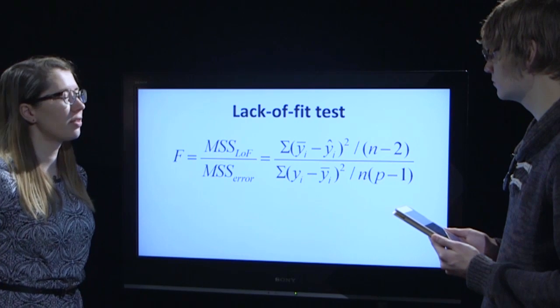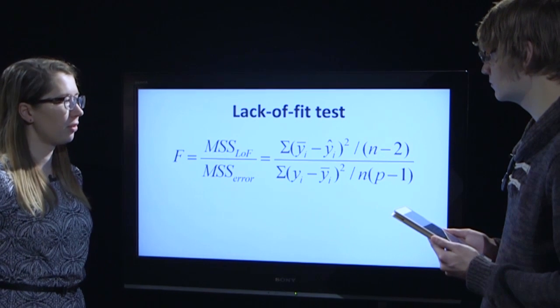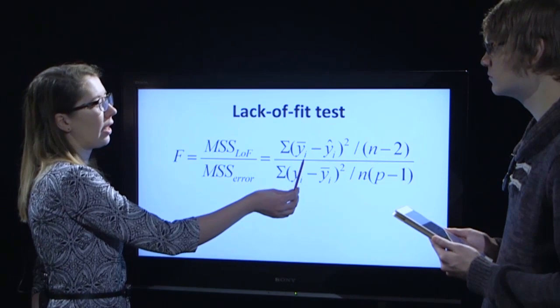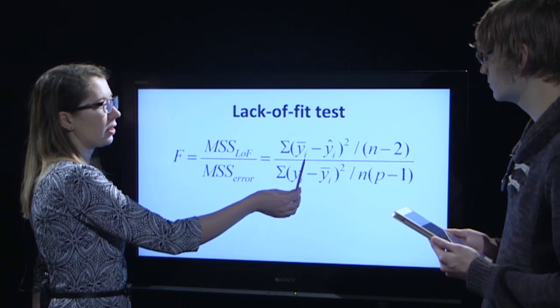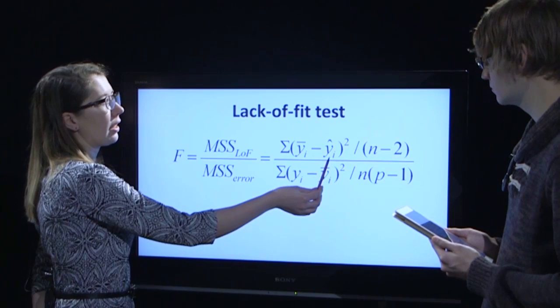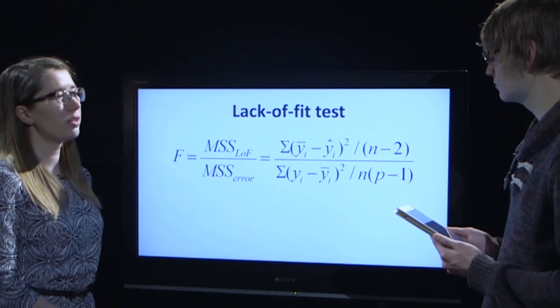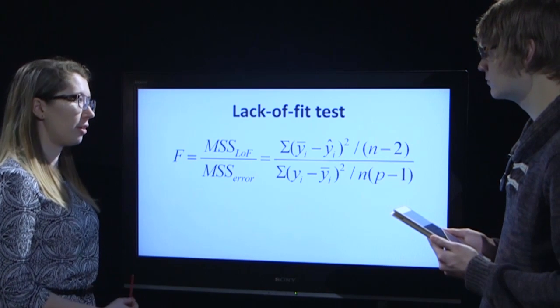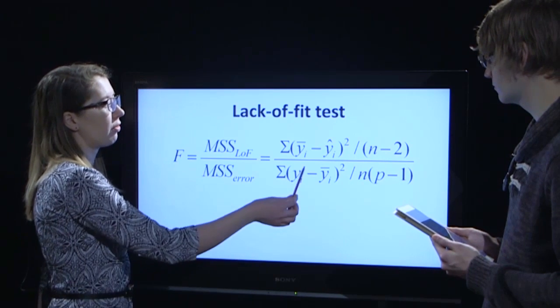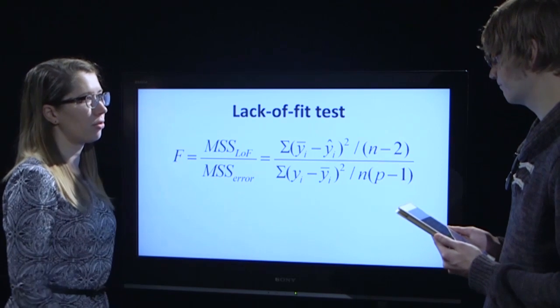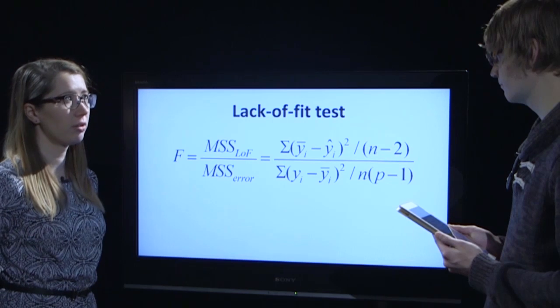Here we have the mean sum of squares due to the lack of fit of the model, which is expressed as the difference between the average signal minus the signal calculated using the calibration function. And also the mean sum of squares due to the random error, which is the difference between the experimental signal and the average of those experimental signals on corresponding concentration level.